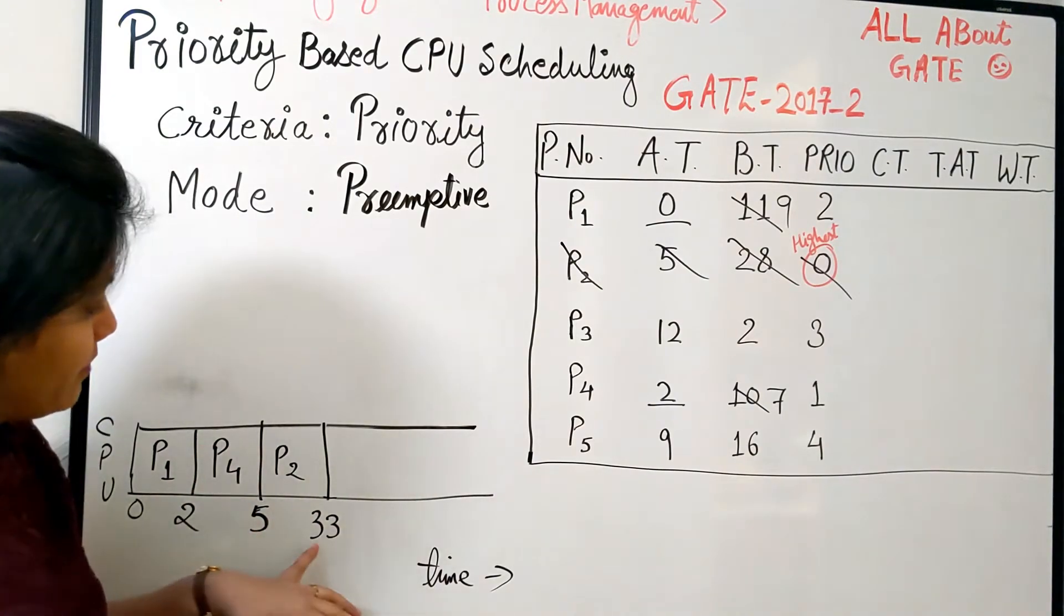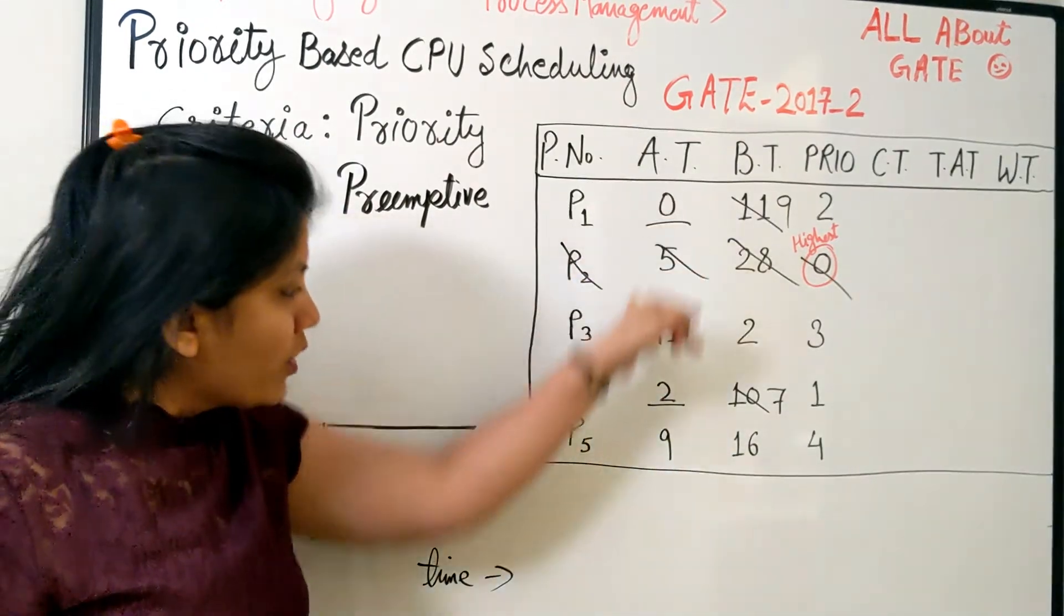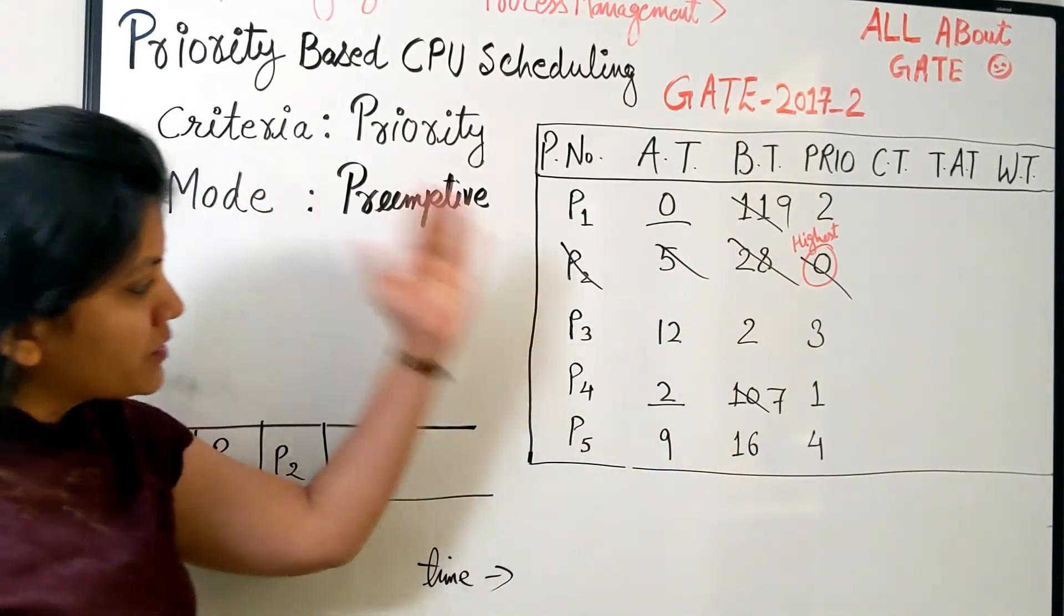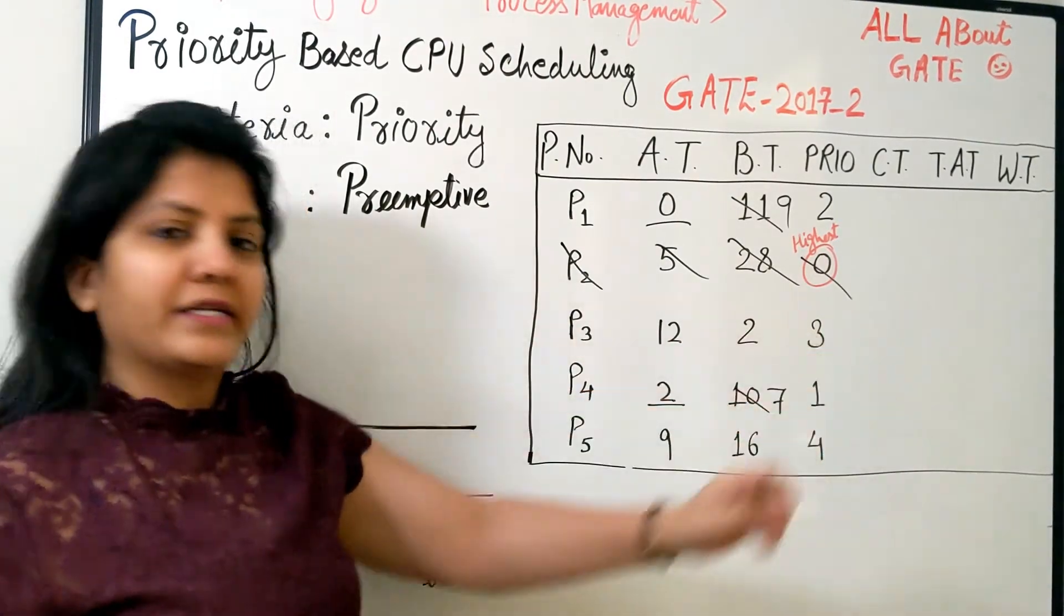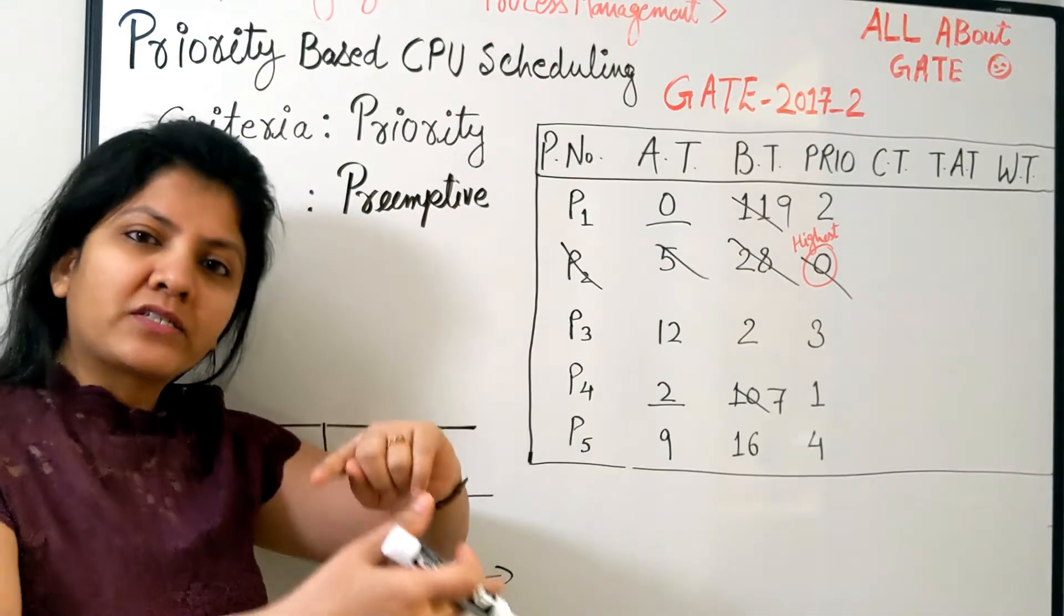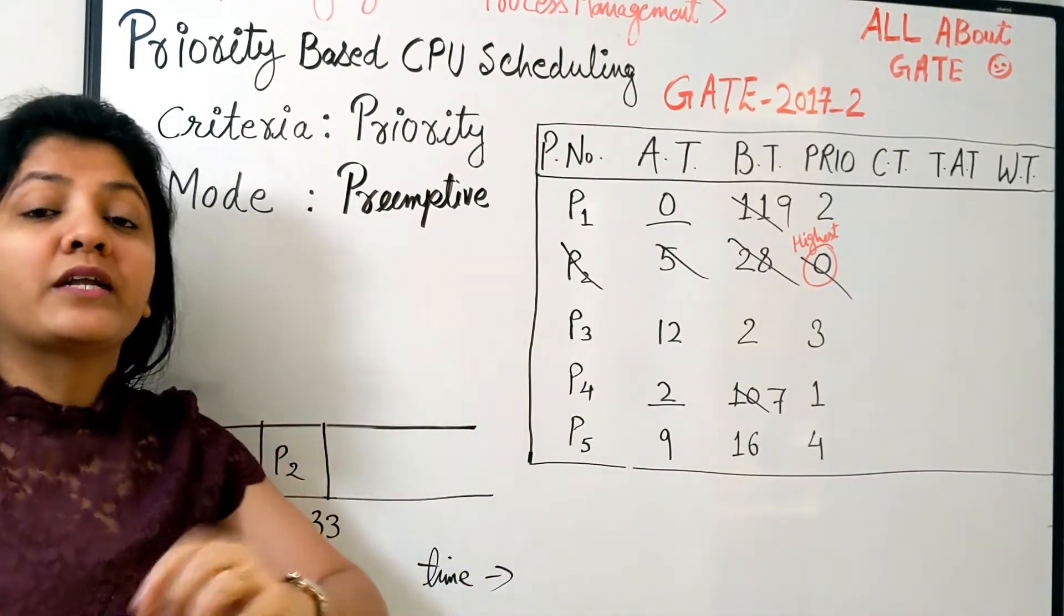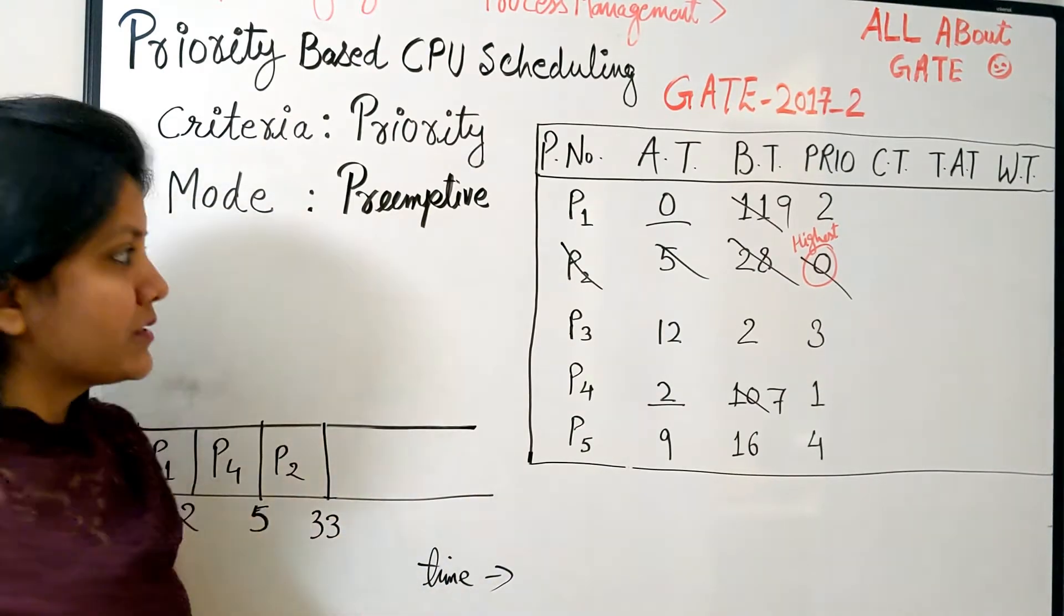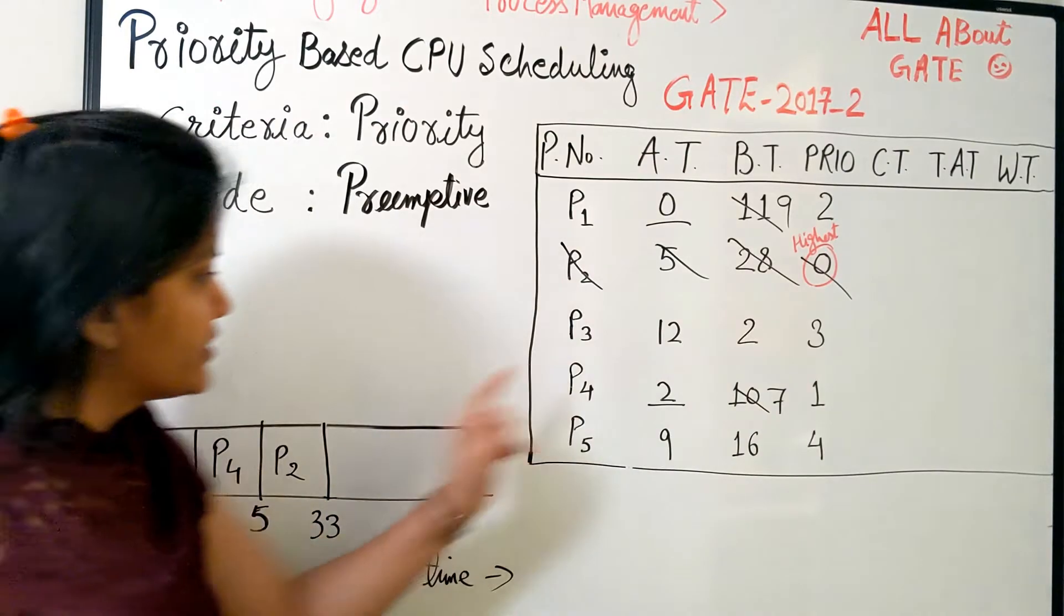By the time 33, we have all the remaining processes in the ready queue. Once you know all the processes are there, it becomes very simple: just take the process which is the next highest priority, schedule it for the complete length, then again the next highest, and likewise lastly we will schedule the lowest priority process. After zero, the next high number is 1, so let's schedule P4.